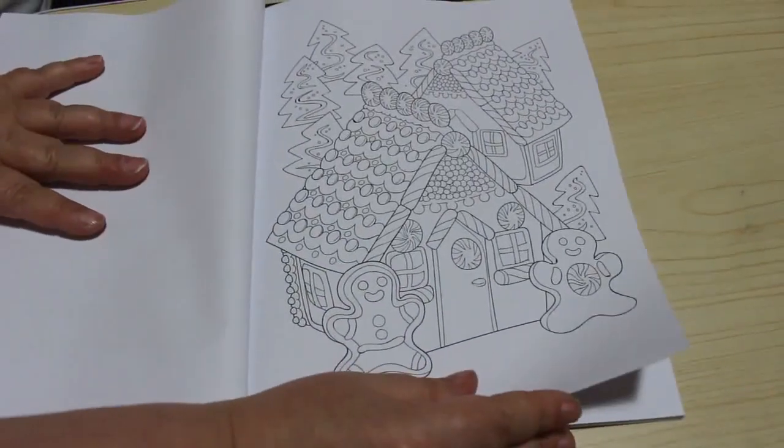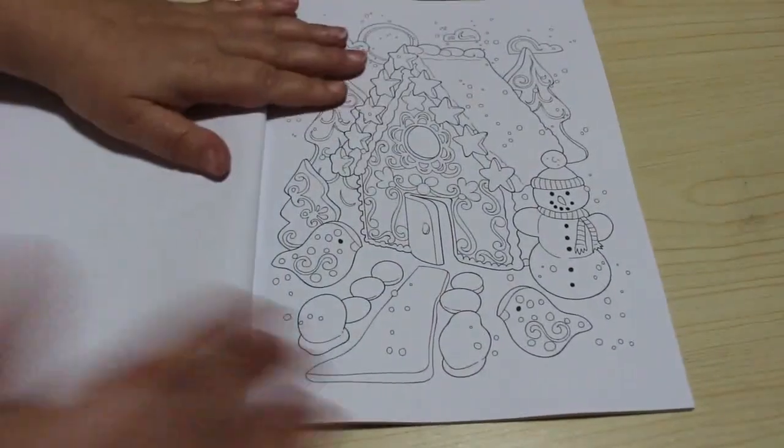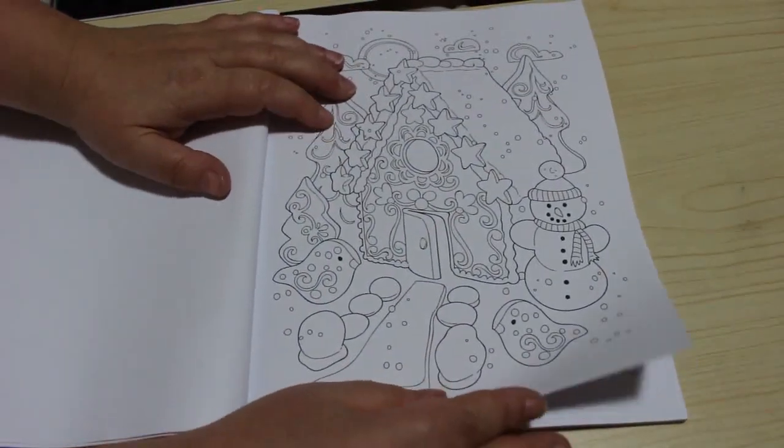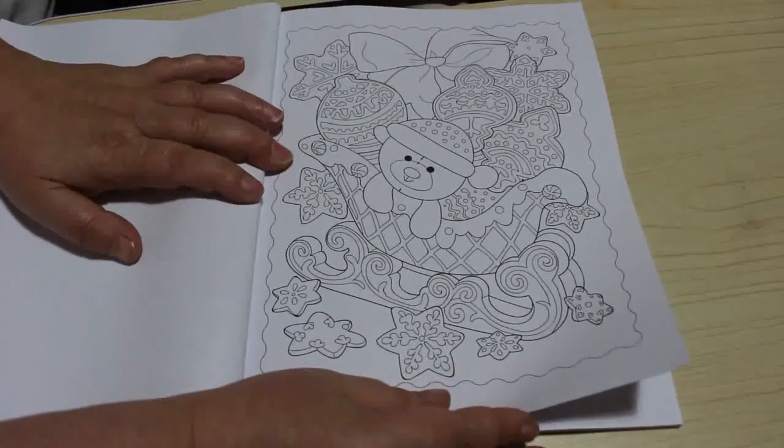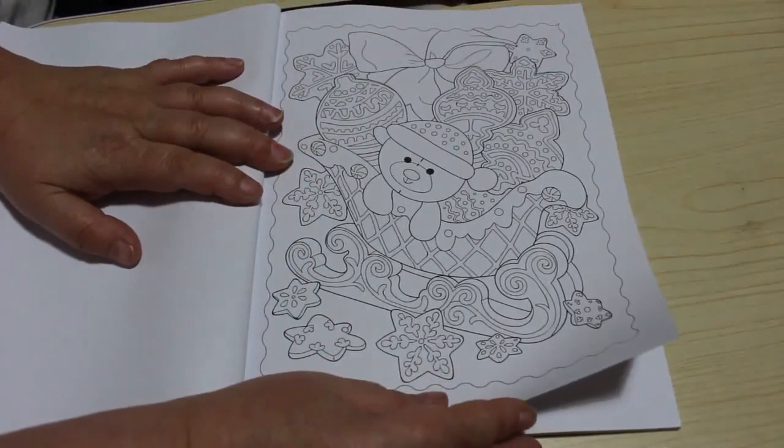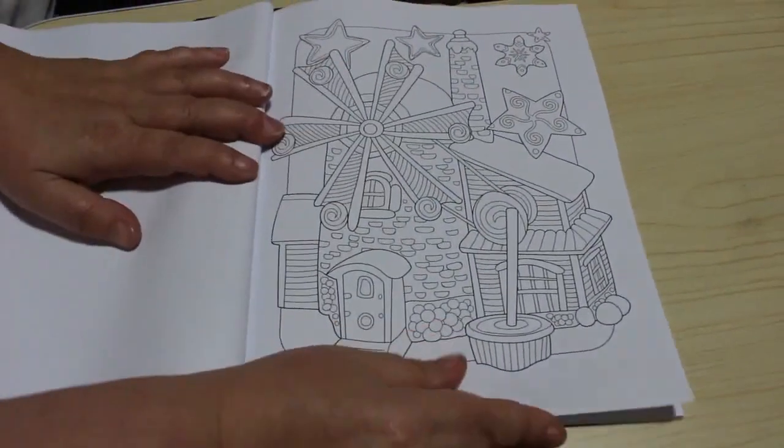And then we've got this one. So they're all gingerbread houses. That's a nice one, the little stars on it. Oh, the teddy bear in the sleigh. Oh that's cute. There's another one.